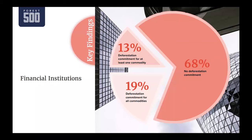We also assess 150 financial institutions that provide the most finance for the identified companies. 68% of these did not have any policies for the commodities we looked at — only 32% had any deforestation commitments at all. Financial institutions are assessed for all four commodities due to their exposure through different companies and sectors they finance. Only one in five of the financial institutions assessed had deforestation commitments for all four commodities, with 102 of the most influential institutions having no deforestation policy at all.